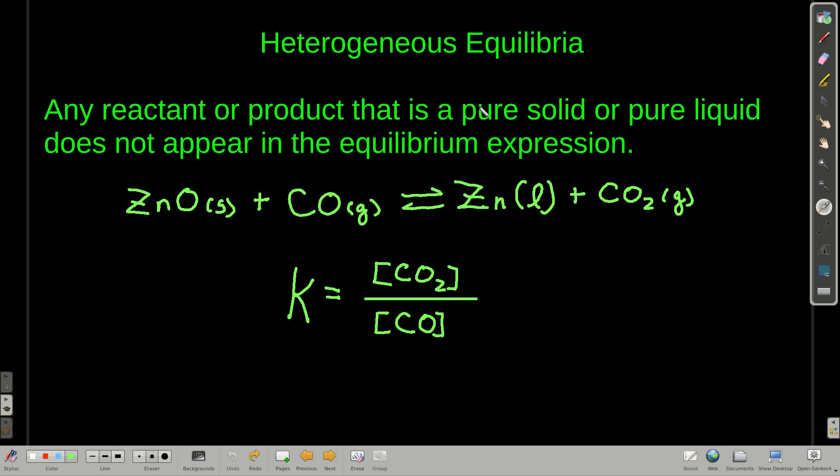Heterogeneous equilibrium. If there's a reactant or a product in an equilibrium reaction that's in either the solid or the liquid phase, it's a pure solid or a pure liquid, then it does not appear in the equilibrium constant expression. Why? Well, if you think about it, here's a reaction where there's a solid and a liquid zinc oxide solid reacting with carbon monoxide gas to make liquid zinc and carbon dioxide gas.